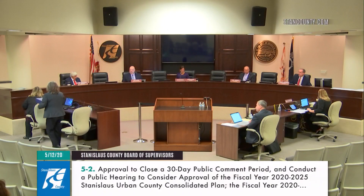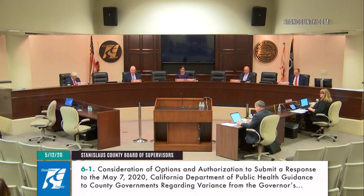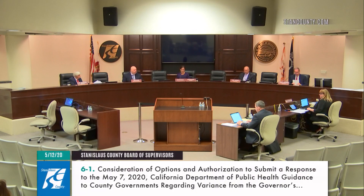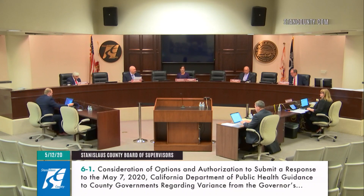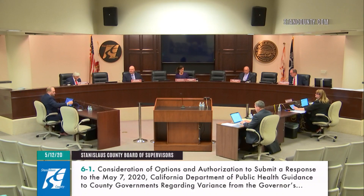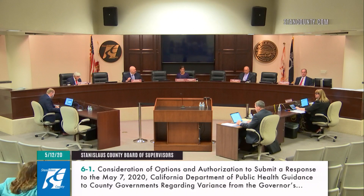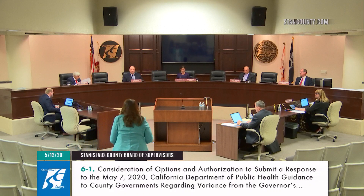Moving on to item 6-1, the last item for discussion on the agenda: consideration of options and authorization to submit a response to the May 7th, 2020 California Department of Public Health guidance to county governments regarding variants from the governor's stay-at-home order. This is all about COVID-19, so to those watching who had questions or comments related to COVID-19, we are now on that agenda item where we will also talk about what a reopening of the economy might look like.